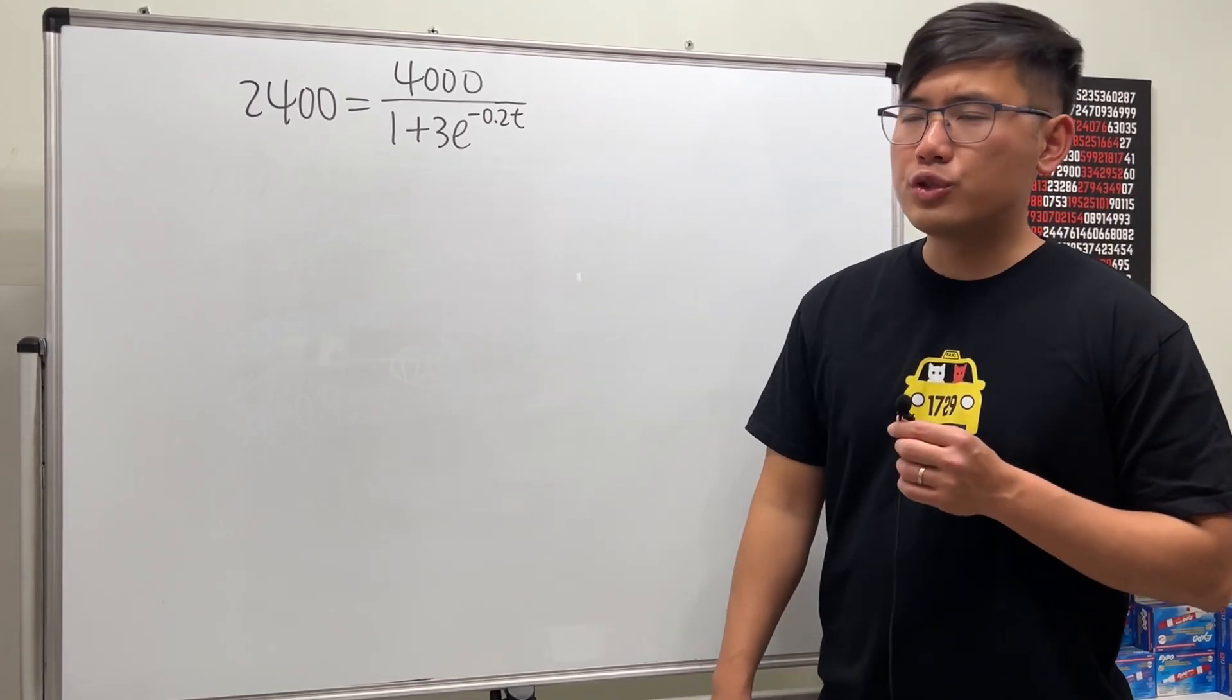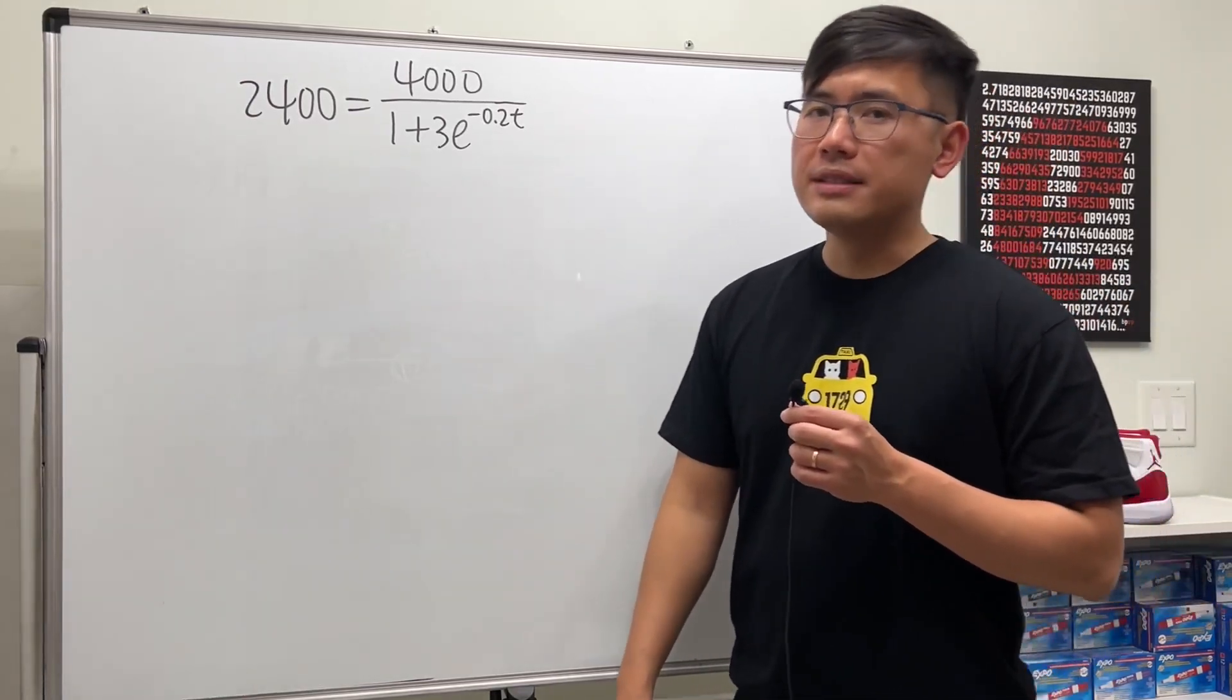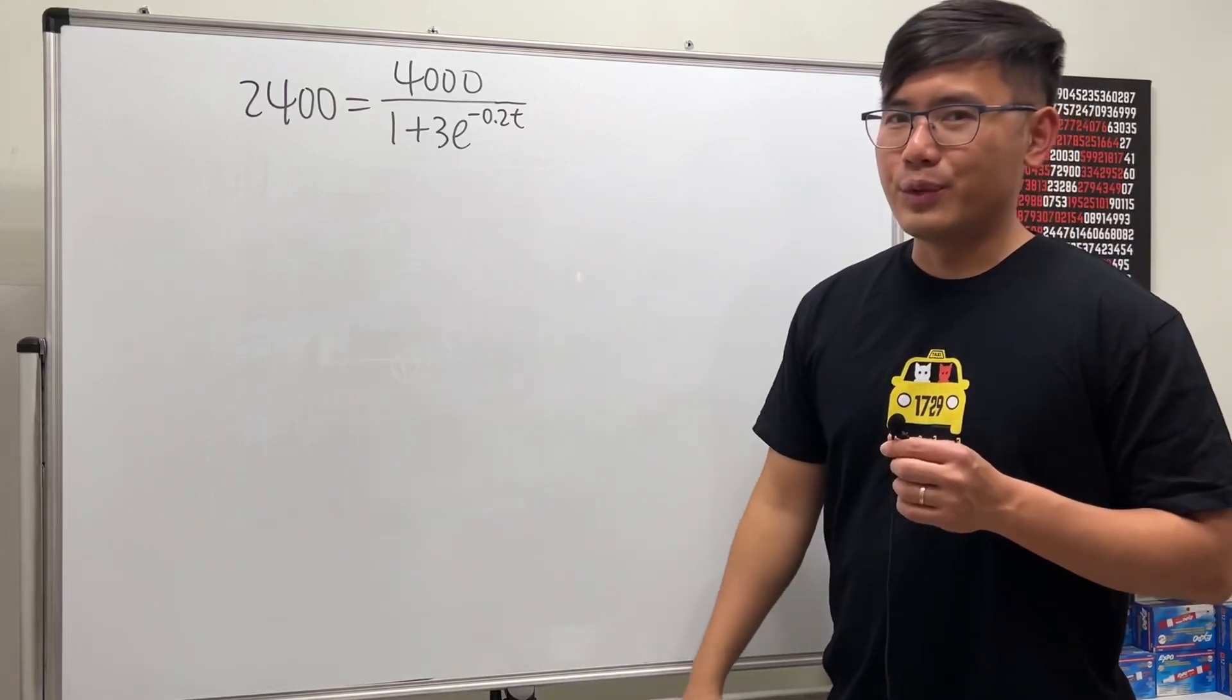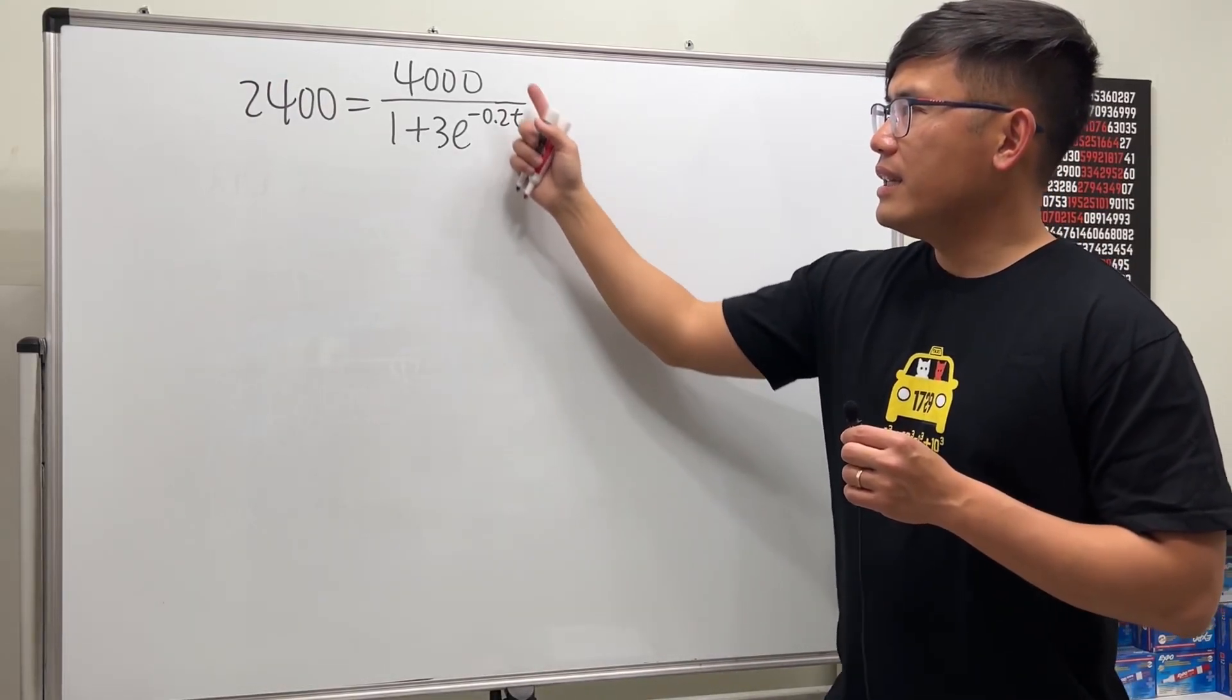For this question we have to solve this equation because it says p is 2400. Let's go ahead and get to work. Notice t is right here, and we have a fraction.